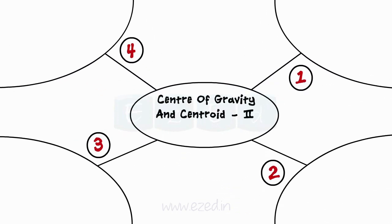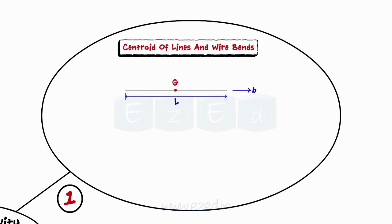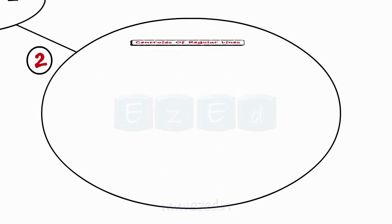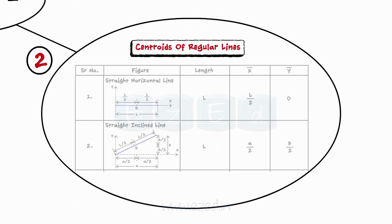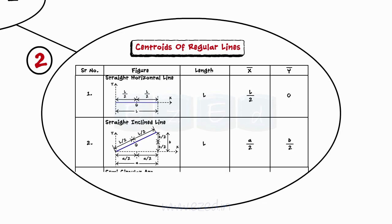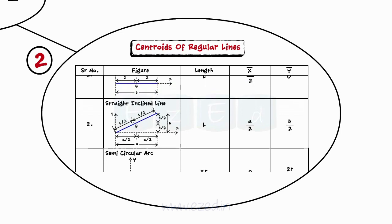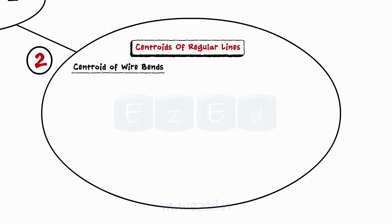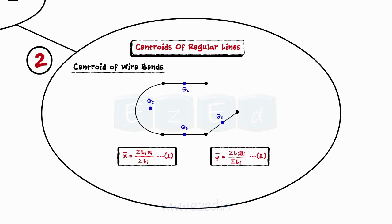Let's have a quick review of what we've studied in this lecture. We first learned to locate the centroid of lines and wire bends, then derived the equations to find the coordinates of centroid of a wire bend by dividing it into small parts. Next, we learned about centroid of regular lines — the table gives us the lengths and x, y coordinates of the centroid of basic lines like straight horizontal line, inclined line, and semicircular arc. A wire bend can be obtained by adding up a number of regular lines; to locate its centroid, we divide it into simple regular lines, find their centroids, and use the relations above.